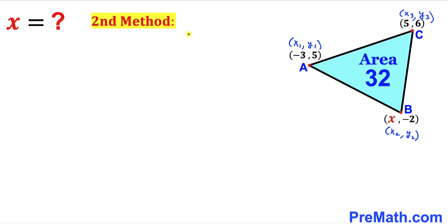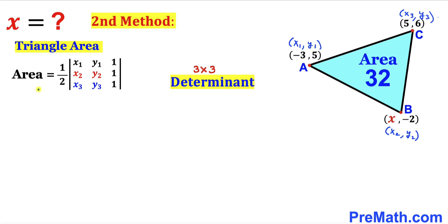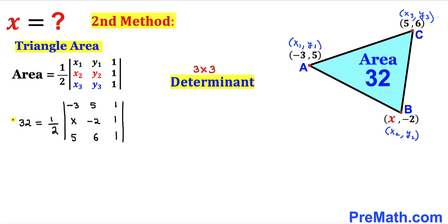Now let me show you the second method. Let's recall the area of a triangle formula using three vertices with a 3 by 3 determinant, since it has 3 rows and 3 columns. The formula is: area equals one-half times the determinant of x1, y1, 1 / x2, y2, 1 / x3, y3, 1. Filling in the blanks with our given vertices and area 32, I've replaced the triangle area with 32 and substituted our x1, y1, x2, y2, x3, y3 values.